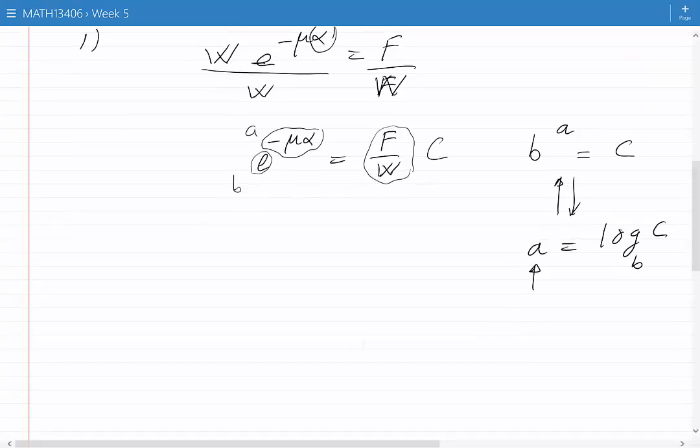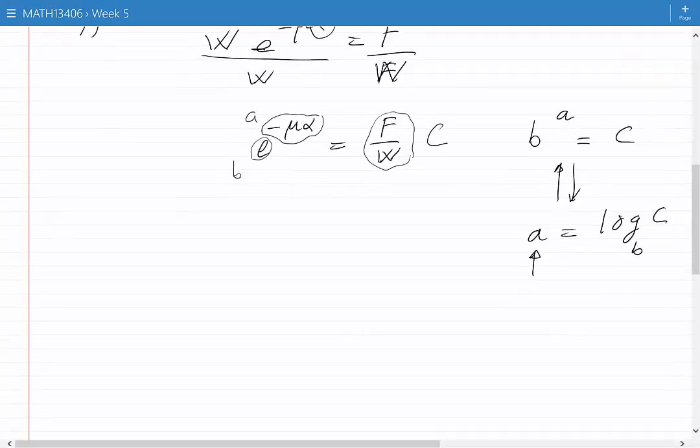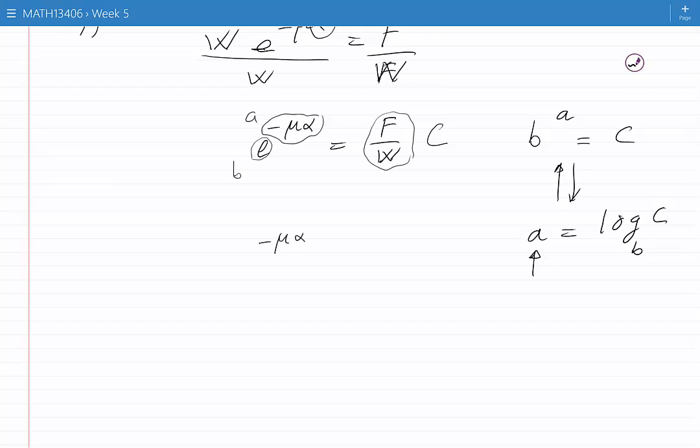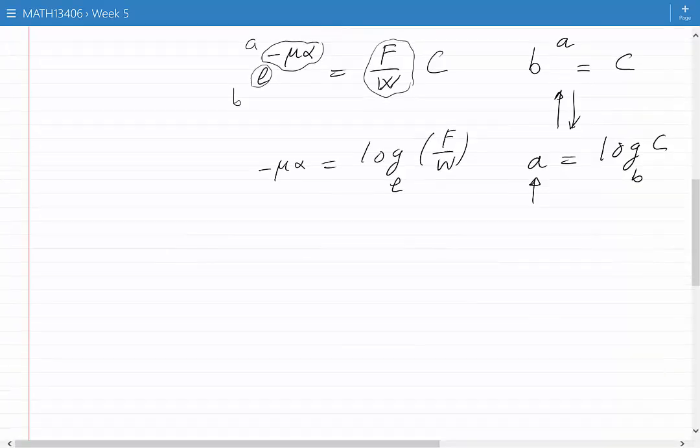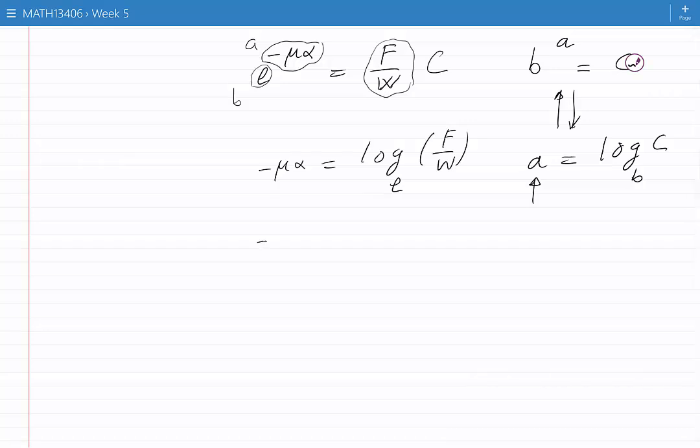And if we follow the pattern, we would have A is equal to log C base B. But we know that log base E is the same as ln. Therefore, we would have minus mu alpha is equal to ln of F divided by W.